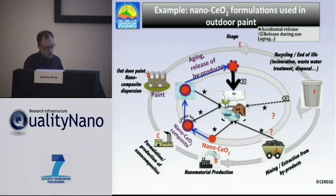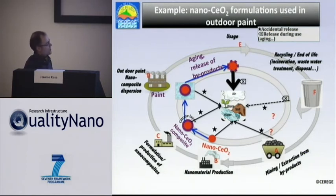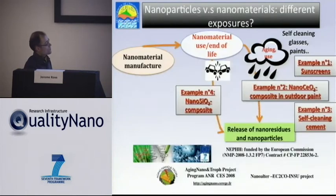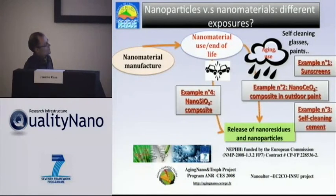We try to go further with other kinds of materials. This morning we had an example of nanopaint — this is another one, not with zinc, but with cerium dioxide. For this paint, the cerium composites are formed with a citrate layer and then incorporated. So we can apply this simple scheme to quite a lot of products. We try to have a larger investigation focusing on different kinds of products: liquid matrices like sunscreen, solid ones like cement or self-cleaning cement, or plastic in which nanosilica are incorporated. We are also working on paint.